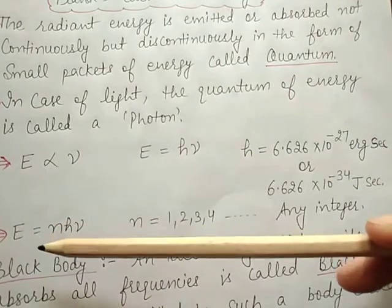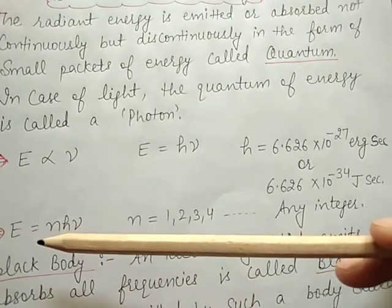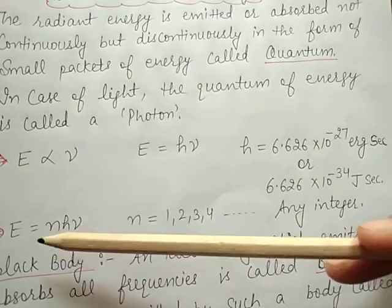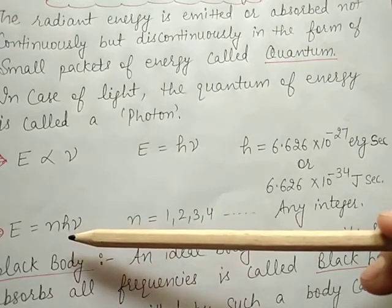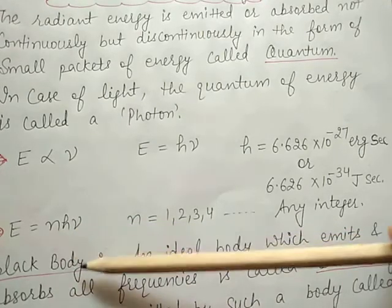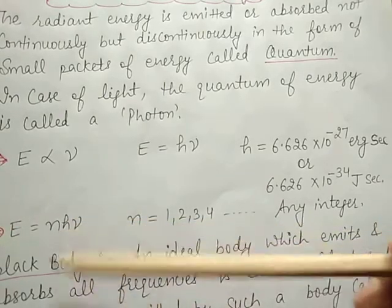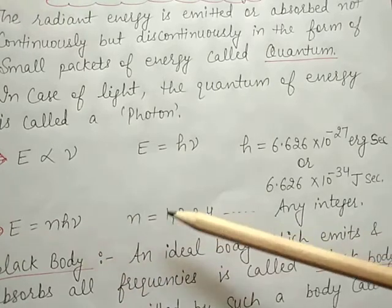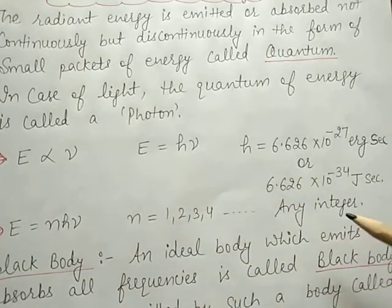The third postulate states that the total amount of energy emitted or absorbed by a body will be some whole number multiple of quanta, meaning energy is quantized. The formula is E equals n times h times mu, where n equals 1, 2, 3, 4 — that is any integer.